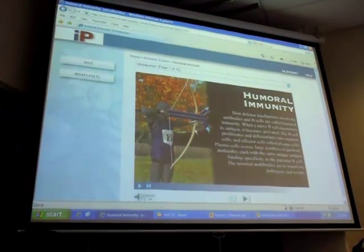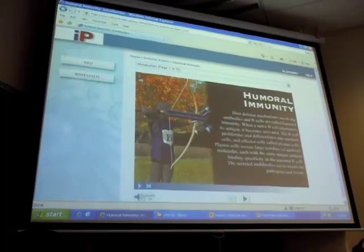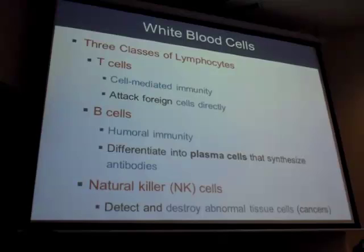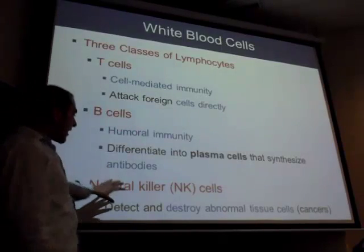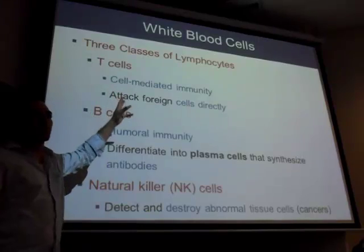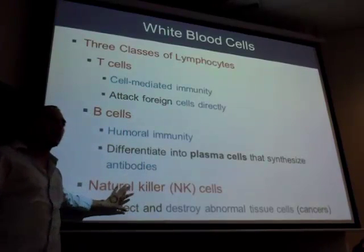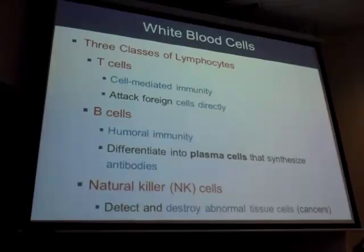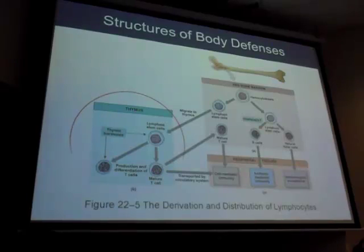Two ways to attack: if we're close, we're a T cell doing cell-mediated immunity; if we're far away using antibodies, we're a B cell doing humoral immunity. Natural killers act like cytotoxic T cells — cell-mediated — but are more specific for cancer cells. Cytotoxic T cells target cells affected by viruses.